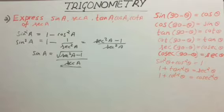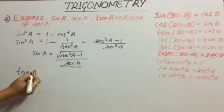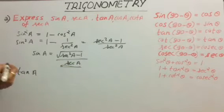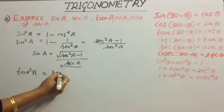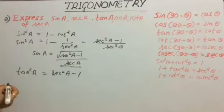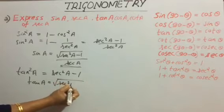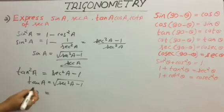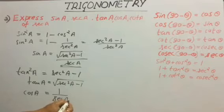Now consider tan a. Using the identity 1 + tan²θ = sec²θ, we get tan²a = sec²a - 1, so tan a = √(sec²a - 1). Now let us consider cos a. We know that cos is the reciprocal of secant, so cos a = 1/sec a.